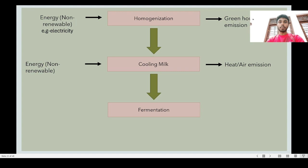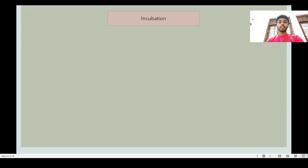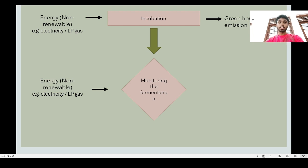To ensure the safety of the yogurt product, fermentation is done after cooling the milk. Energy sources used are non-renewable; water is also used in this process, and greenhouse gases are released as output. Incubation is the seventh step; energy sources are non-renewable such as electricity and LP gas, and greenhouse gases like carbon dioxide and nitrous oxide are released. Monitoring the fermentation is the eighth step — a quality inspection process — using non-renewable energy such as electricity and LP gas, with greenhouse gases including carbon dioxide and nitrous oxide released.